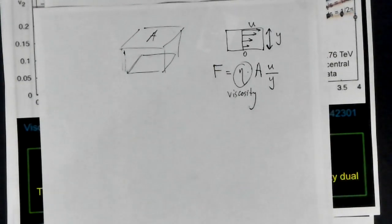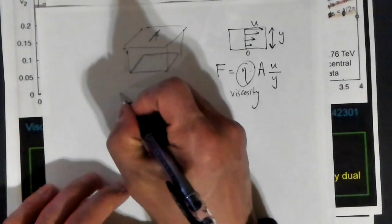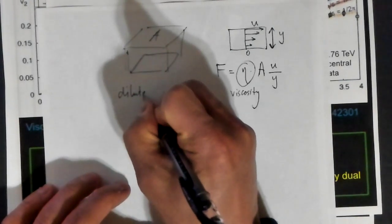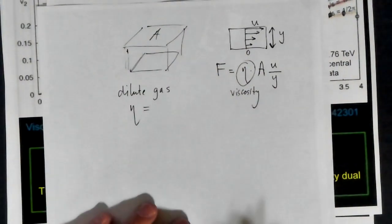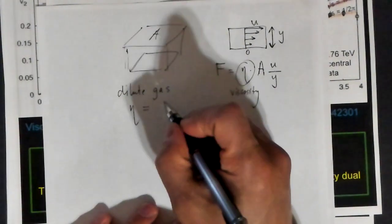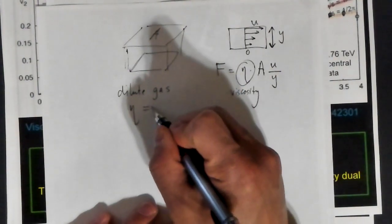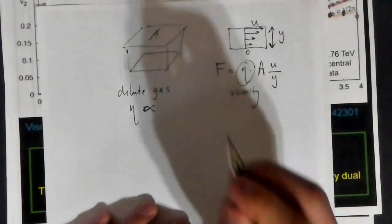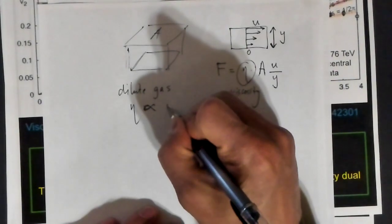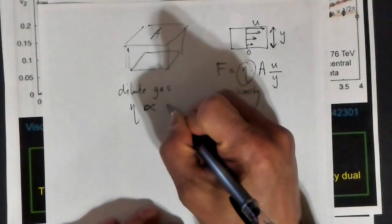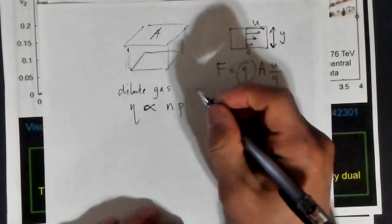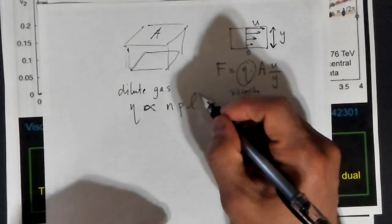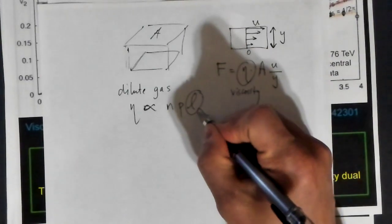You can also talk about the viscosity for a dilute gas. For a dilute gas, you can write down the viscosity in terms of some formula. It's proportional to the density of particles times the average momentum times what's called the mean free path.